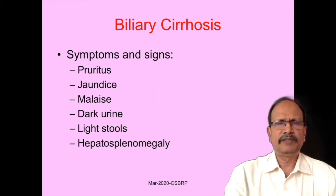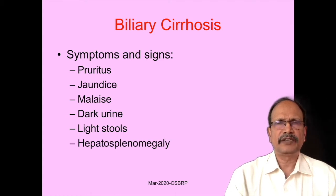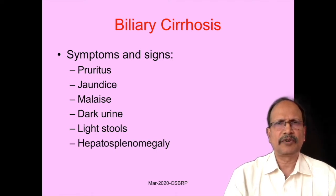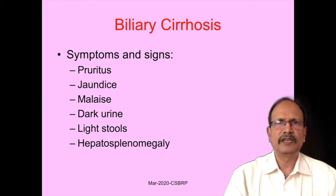In biliary cirrhosis, symptoms are due to stasis of bile. This stasis of bile results in the accumulation of bile salts within the circulation, and the patient's usual complaint is intense itching. So, pruritus is the manifesting feature in biliary cirrhosis. In addition to that, these patients will have jaundice, which is a conjugated variety of jaundice, and they may have malaise, dark urine because of bile pigment, and light stools because less bile is entering into the small intestine.